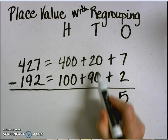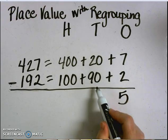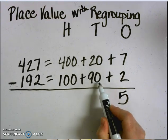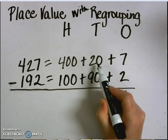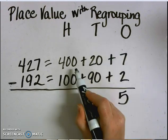20 subtract 90. I know I can't do that because I can't take 90 of something away from 20. So I need to borrow. I need to regroup so that I can borrow.